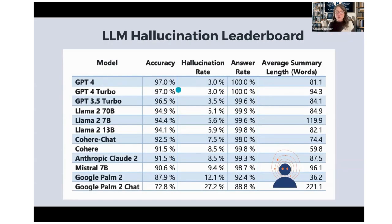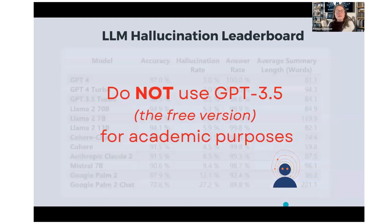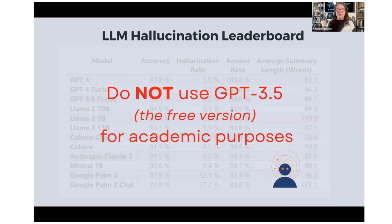GPT-4 and GPT-4 Turbo are the best in show for accuracy. Models like Llama, Anthropic's Claude, and Mistral are not far behind, but GPT-4 really stands out. Even so, a 3% hallucination rate is still something to watch out for. We don't suggest using GPT-3.5 — currently the free version — for academic purposes. It just doesn't have enough analytical power. If you compare GPT-4 output to GPT-3.5, you'll immediately notice a difference.